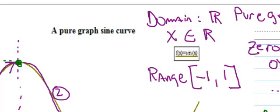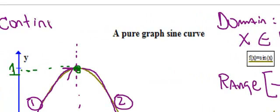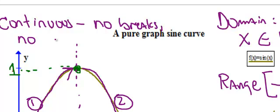And another thing to note here is a pure sine graph is continuous. And I think of a roller coaster - it sure looks like a roller coaster to me. So it's continuous, there's no breaks, there's no peaks or sharp points, no sharp edges. Nice and smooth and continuous.